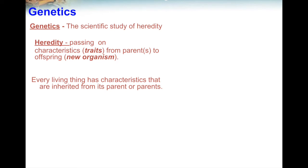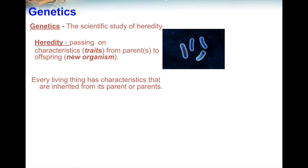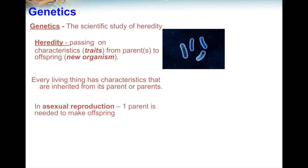Every living thing gets their characteristics or traits from either one parent or two parents. Some organisms, like bacteria, can make a copy of themselves, and the new organisms that are made will be an exact copy of the parent. When only one parent is needed to make offspring, this is called asexual reproduction.